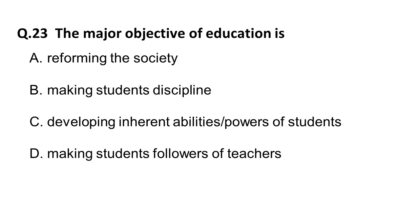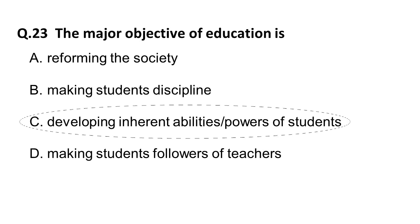Next question: the major objective of education is — options are reforming society, making students disciplined, developing inherent abilities and powers of students, or making students followers of teachers. The correct answer is developing inherent abilities and powers of students.